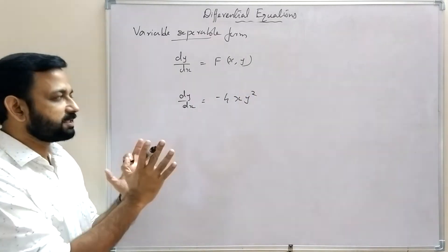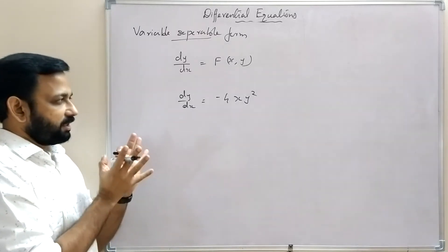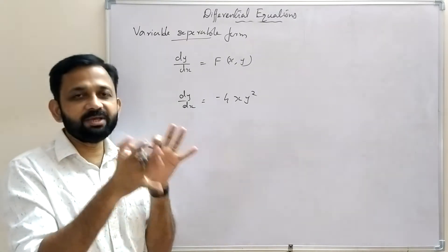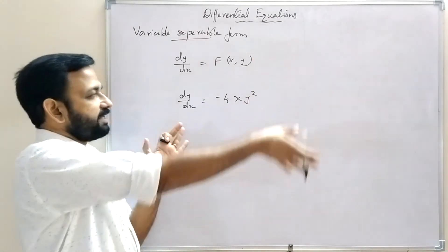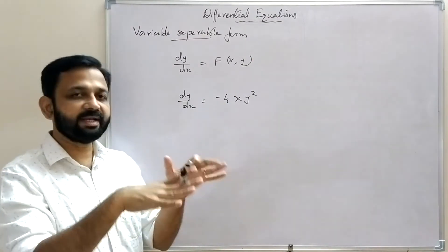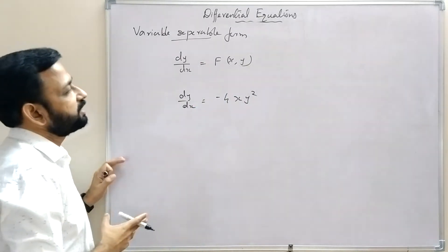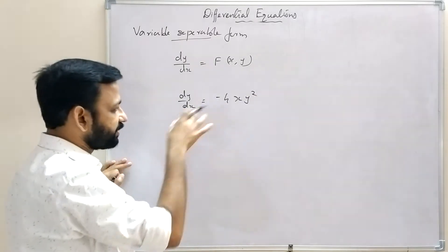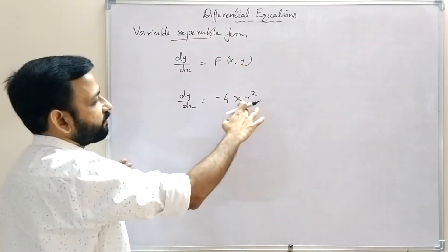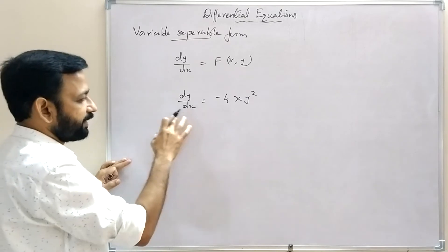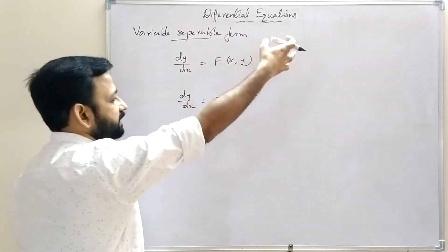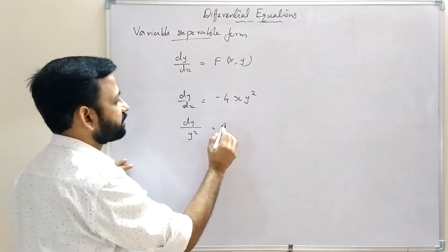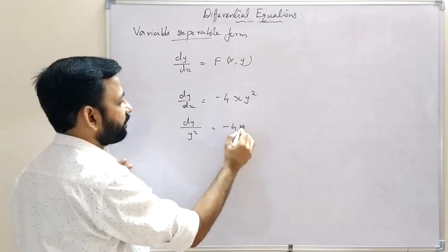In variable separable form, we first write terms containing y and dy on one side, and x and dx on the other side. So dy/dx = -4xy² becomes dy/y² = -4x dx, by taking y² from right to left (going to denominator) and dx from left to right (going to numerator).